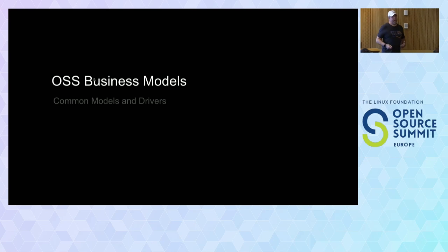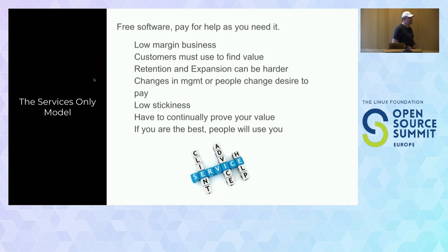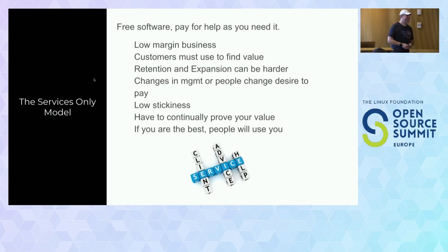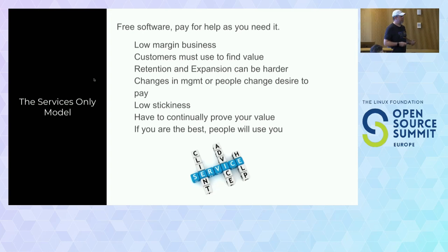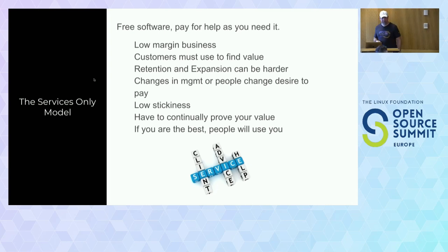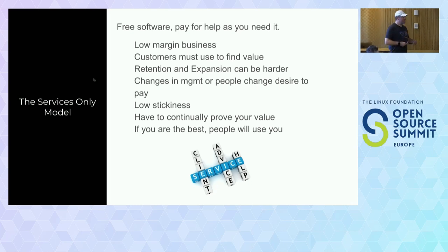How do we make a business out of that and do so in a way that respects everybody involved? We've been iterating on open source business models — looking at ways to make a business that uses open source software. We started with the classic services model: make open source software, give it away, build adoption, and sell some support and services. The challenge is that services models are very high churn — people jump ship to another service provider. It's a commodity, and it makes it really hard to build a successful growing business when you're losing 20% of your customers every year.